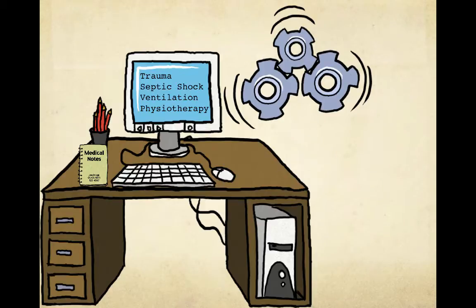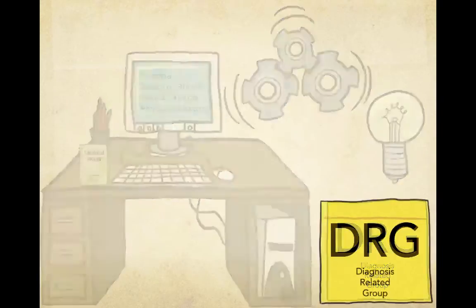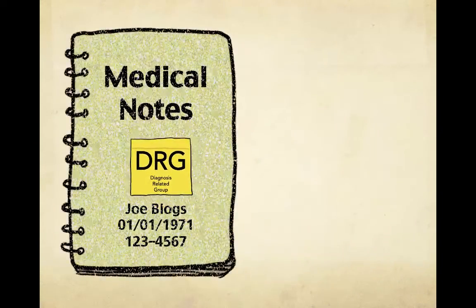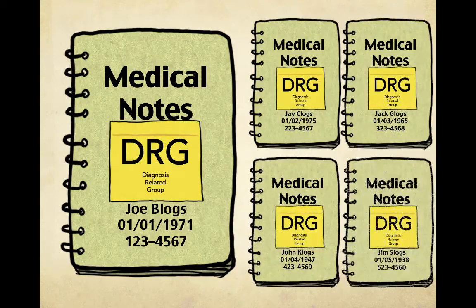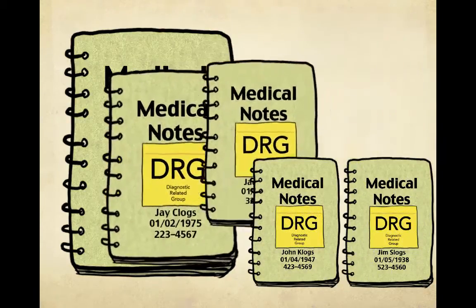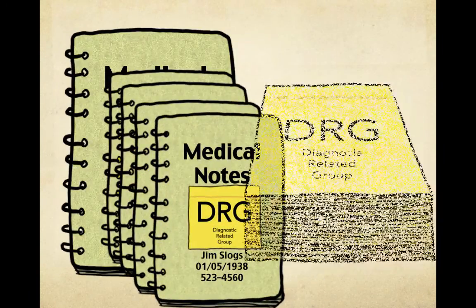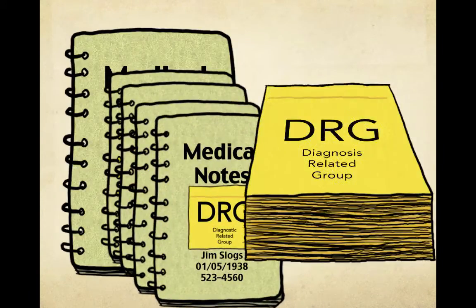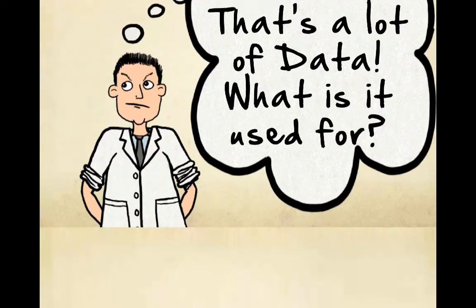Once processed, we're given a diagnosis-related group, or DRG, and a coding sheet is created for that patient's admission. That coding sheet is attached to the electronic medical record. By combining the data from all available medical records, we can collate all the DRG data together. Wow, that's a lot of data — what is it used for?